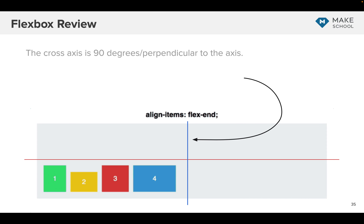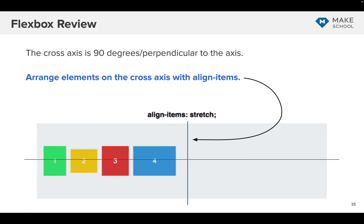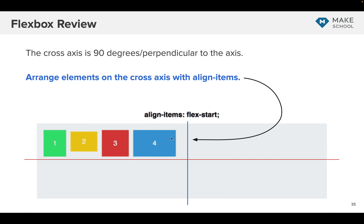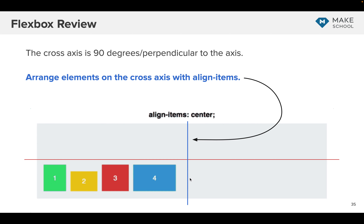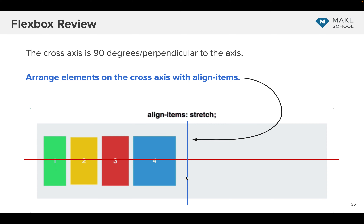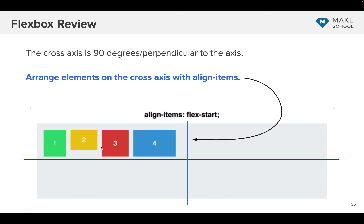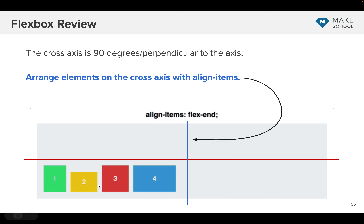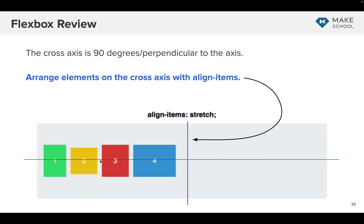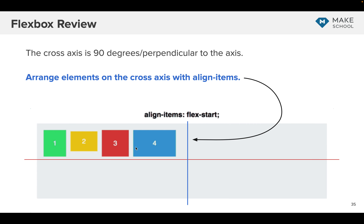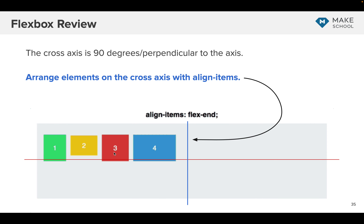Align items determines how elements are arranged on the cross axis. The main axis is the red line — justify content handles that. Align items is the cross axis. With stretch, they stretch. With baseline, all the text aligns on the bottom edge. Flex-start, everybody goes to the top. Flex-end, everybody goes to the bottom. Center, everybody's centered. With baseline, all the text boxes align on the bottom edge.